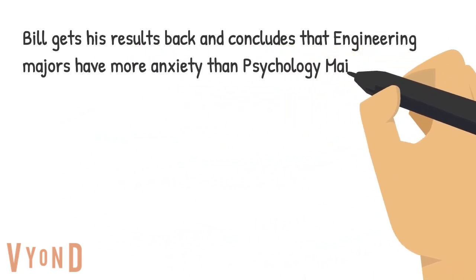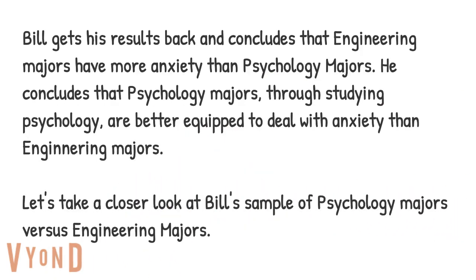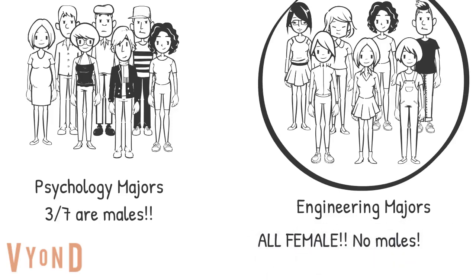Bill gets his results back and concludes that engineering majors have more anxiety than psychology majors, and that psychology majors, through studying psychology, are better equipped to deal with anxiety. However, looking more closely, the psychology major group has three males and the engineering major group includes all females. This is not a good sample of engineering majors, as engineering tends to have a majority of males. Since females tend to report more anxiety symptoms than males, Bill's findings may simply result from the unequal distribution of males and females between the two groups.